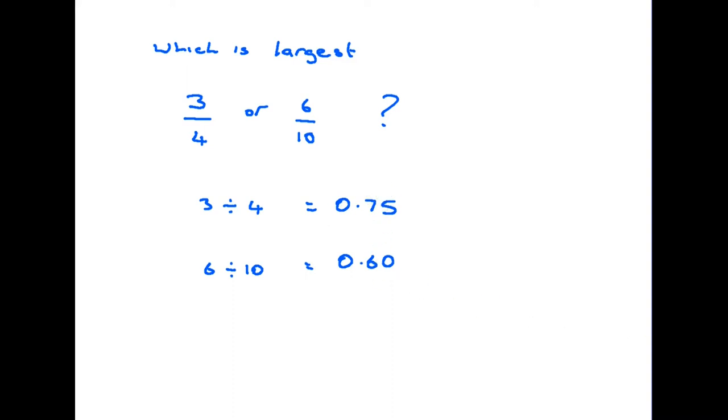Now that we've got them in decimals it makes it a lot easier to compare. This one is 0.7 this one is 0.6, therefore this one is the biggest. So three quarters is larger than six tenths.